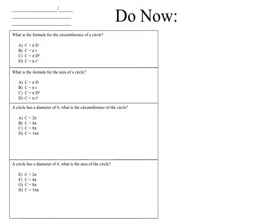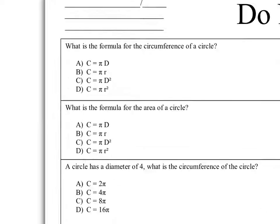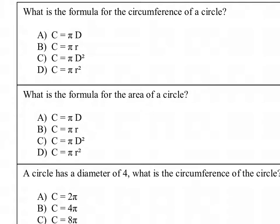Looking at our classwork for today, we are going to look at our first do now. What is the formula for the circumference of a circle? This is something we should have memorized. We know that C is equal to πd. We also know that we can replace d with 2 times the radius — π times 2r. None of the rest are correct because r squared is not the same thing as 2 times r.